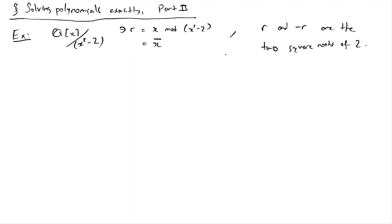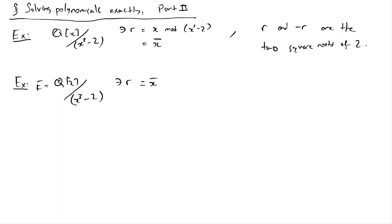But this is not what's going to happen in general. For example, take Q[x] modulo x cubed minus 2. Again, r here is the image of x. What's going to happen is that there is precisely one root of the polynomial x cubed minus 2 in this field. Let's call this E. You can see that there is only room for precisely one root by embedding E into the complex field.